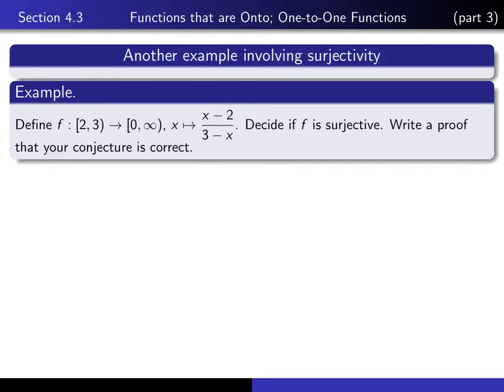This is related to the function we looked at in the previous video, except we've modified the domain, we've restricted our domain, and we've also modified our codomain. This is the set of non-negative real numbers. In the previous video, it was the set of all real numbers. Your task is to decide if f is surjective and write a proof that your conjecture is correct.